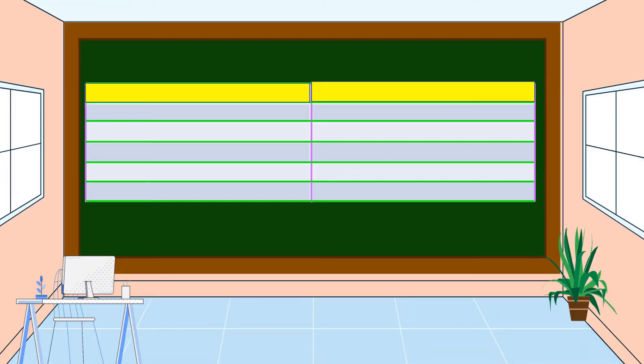After we tally the survey result, then we will make a table to organize the data. In our example, for the first column, it represents the kind of sport, and for the second column, it is the frequency.